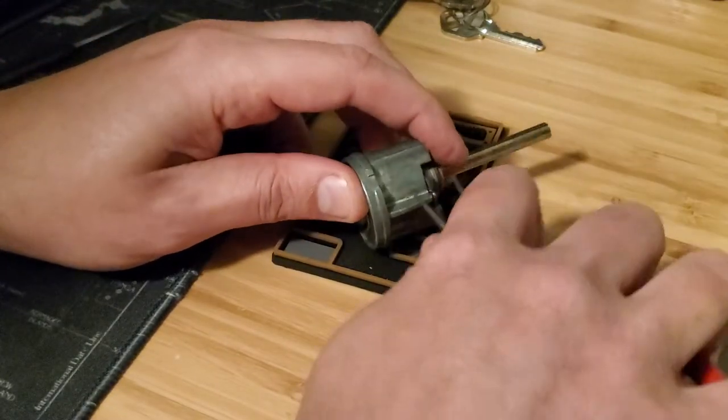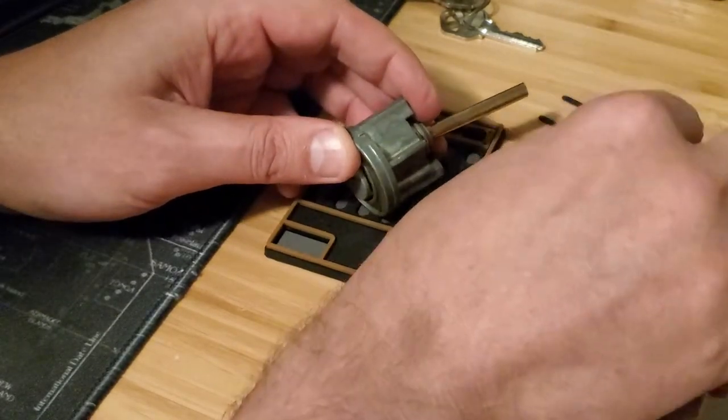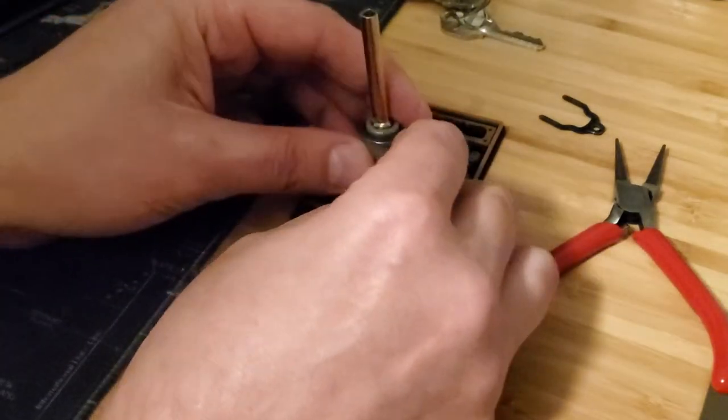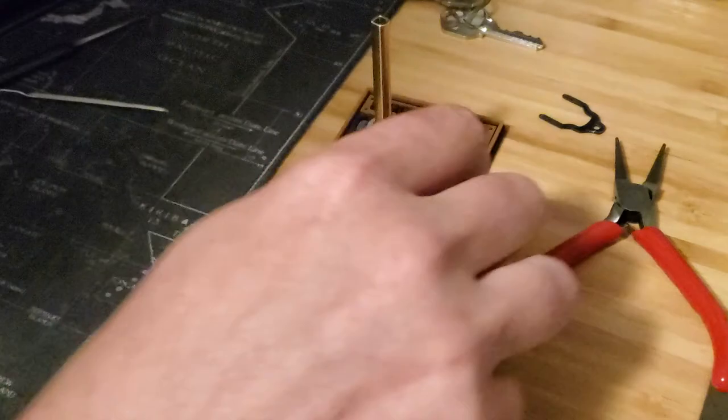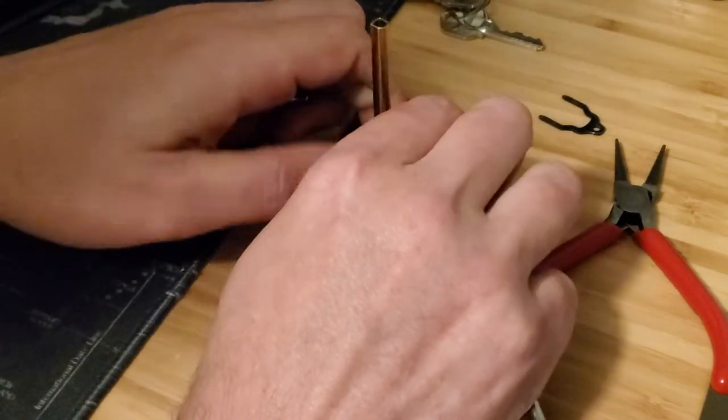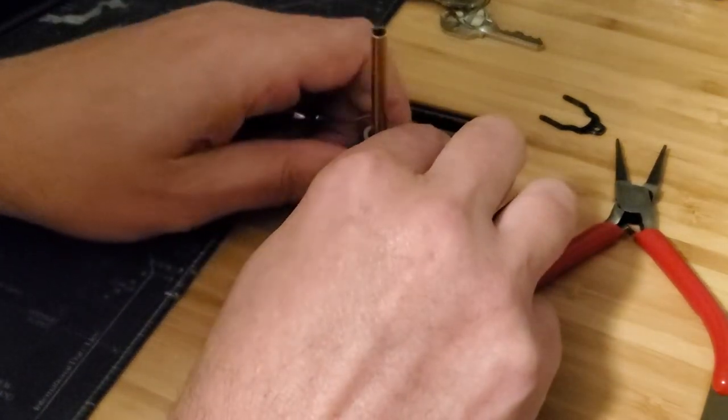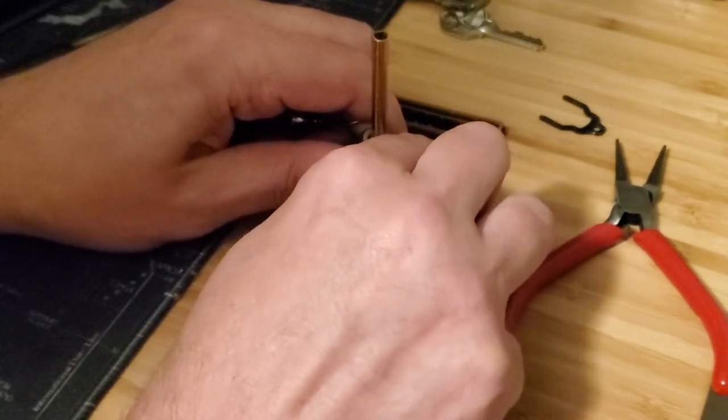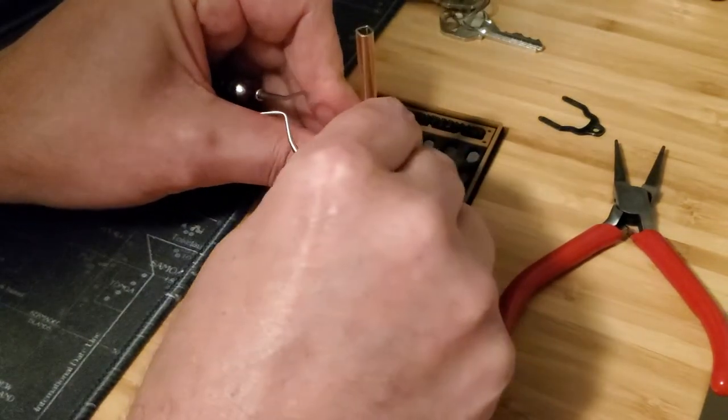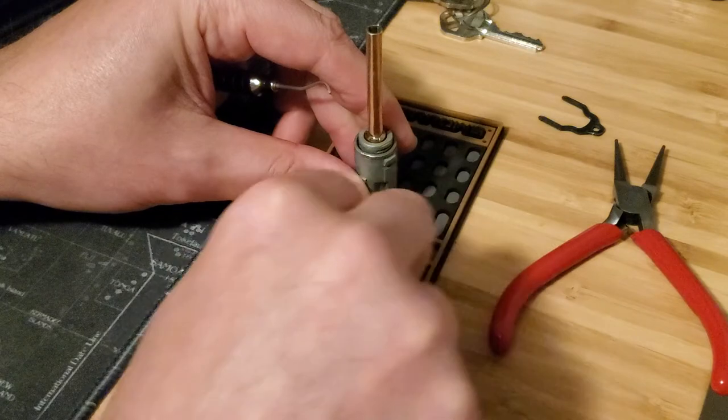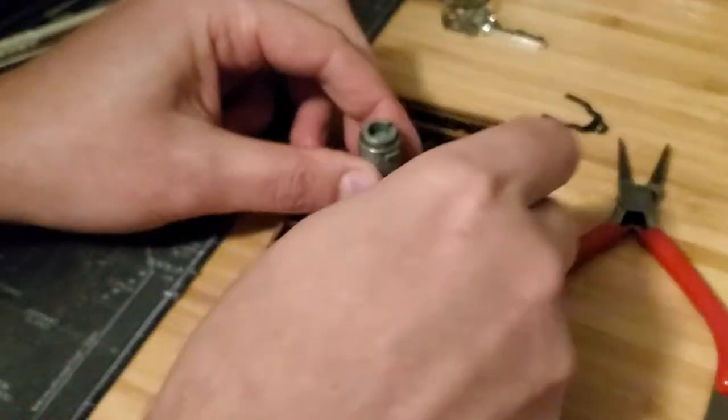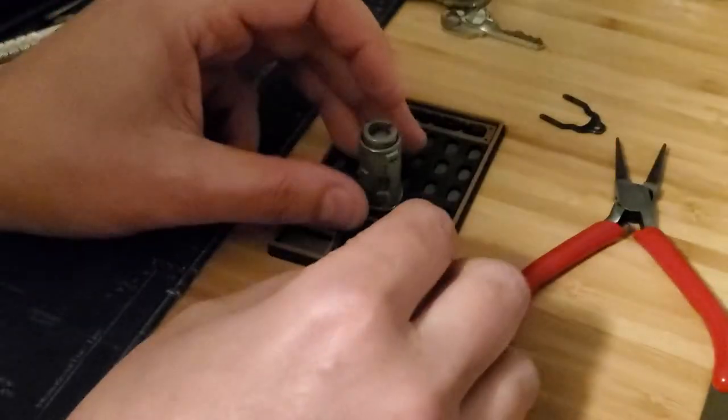And take it out of the housing. And then I can get this v-clip off. There it goes. All right. Take the tail piece out and set that aside. And then put my key in.